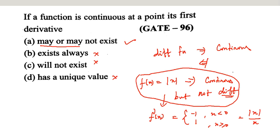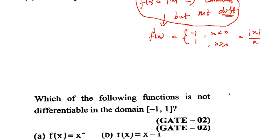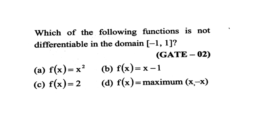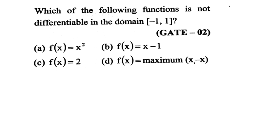Next question: which of the following functions is not differentiable in the domain, closed interval [-1, 1]? The first subdivision (a) is a polynomial function. Polynomial functions are continuous and differentiable everywhere, so that is not the correct answer.